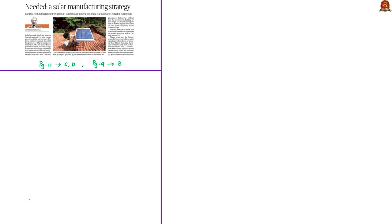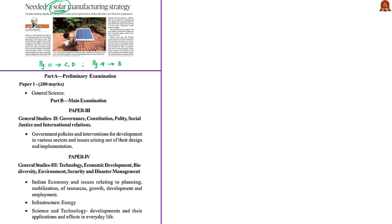Let's move on to the first article discussion. This article is an editorial about the solar energy sector of India. The discussion is relevant in prelims preparation under general science. In the main syllabus, it is relevant in GS paper 2 under government policies and interventions for development in various sectors and issues arising out of their design and implementation. In GS paper 3, it is relevant under Indian economy and issues relating to planning, mobilization of resources, growth, development and employment, as well as infrastructure — particularly energy — and science and technology development and their applications in everyday life.